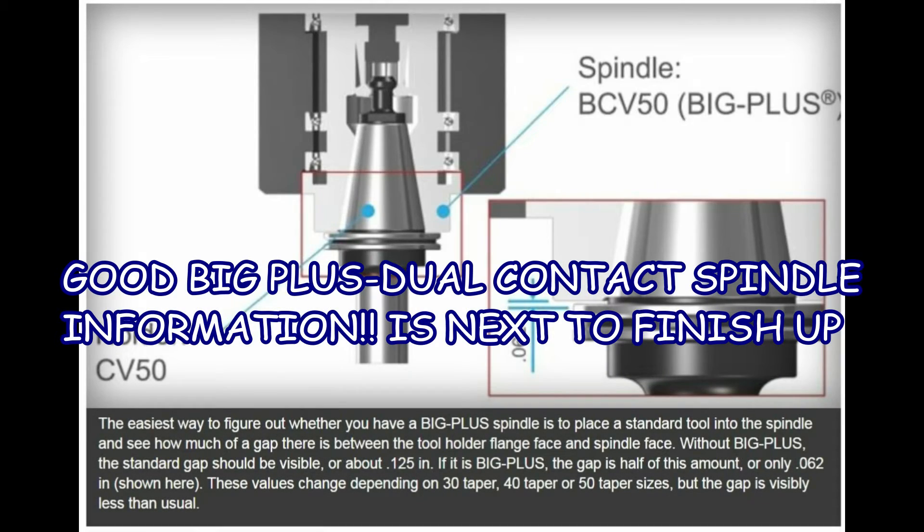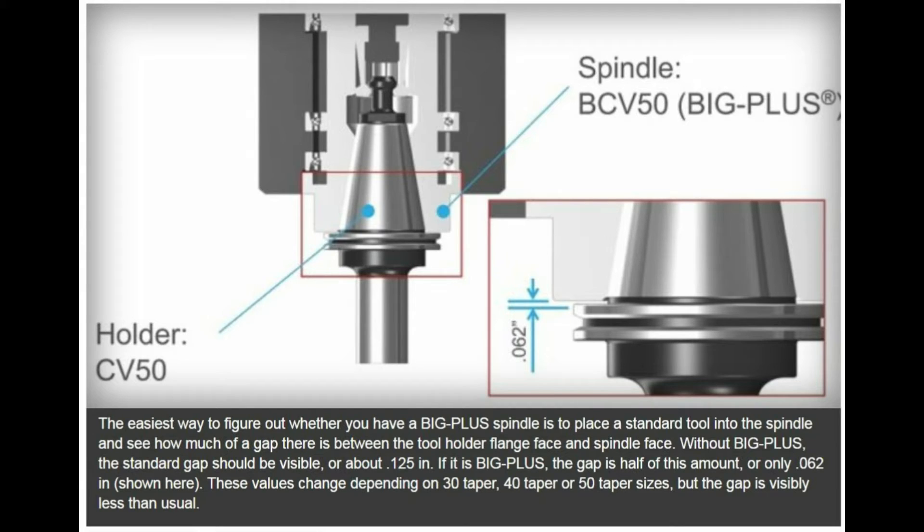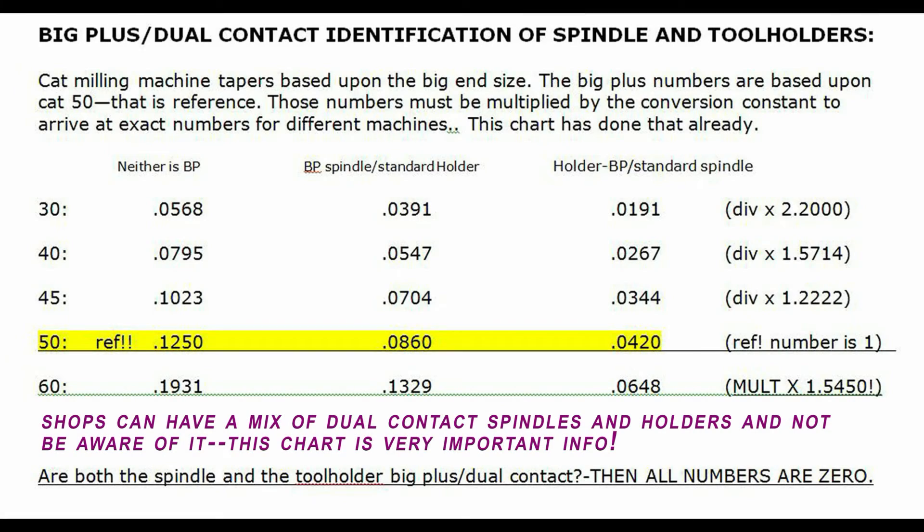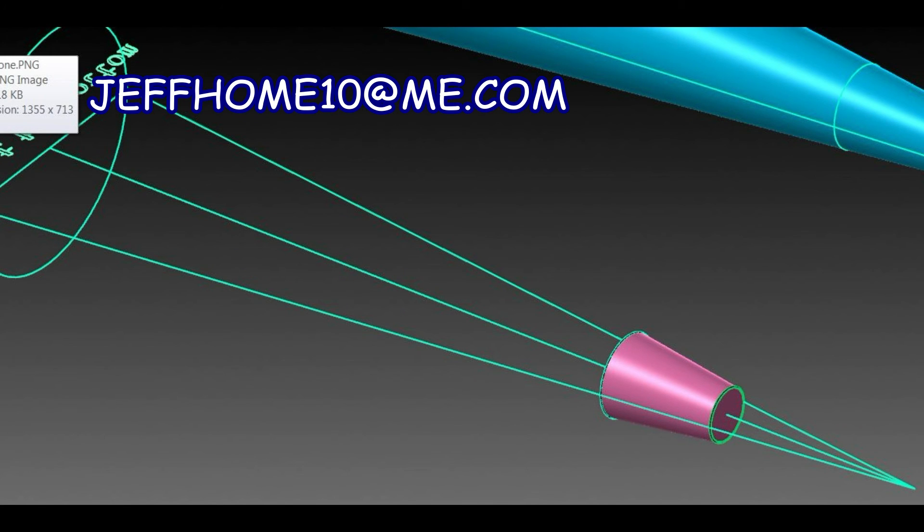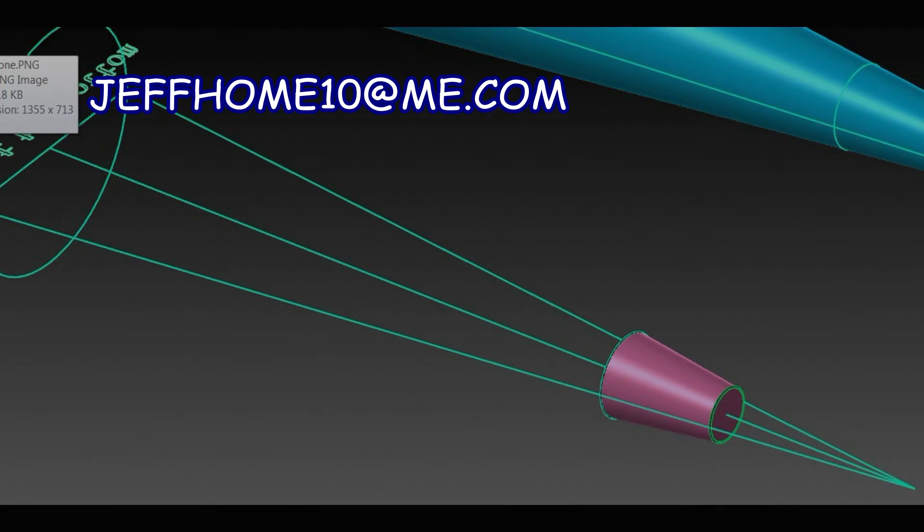And the video slideshow ends up with Big Plus information. Big Plus dual contact spindles are very important and very few people know if they have them or not. It can add thousands of dollars to the value of your machine if you sell it. And there you go. Save that. For God's sake, save that. Write what you see there. I put a lot of work into that. I finish up. There's the Bridgeport taper. There's my email.